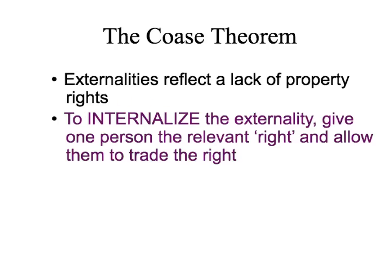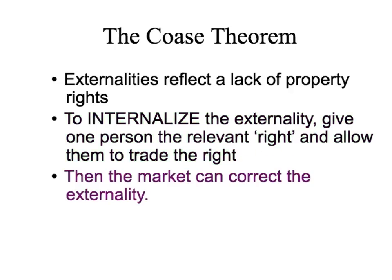We want to create a property right — give one person the relevant right and then allow them to trade that right. By doing this, the market can automatically correct the externality. No need for a tax, no need for a subsidy, no need for any more government regulation. Just create the property right, allocate it, and let the market go. Let's see why this works.